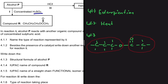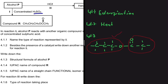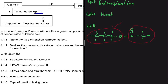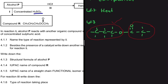For 4.1.3, we're writing the structural formula for just the alcohol part. That gives us propanol. We have three carbons, then OH, and then we fill in the hydrogens — and we have the structural formula of alcohol P.